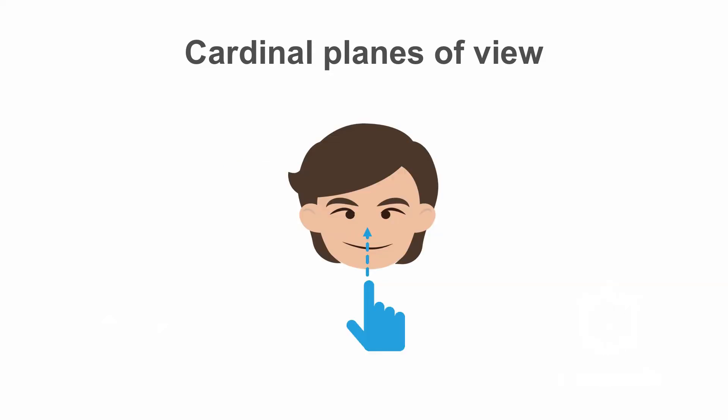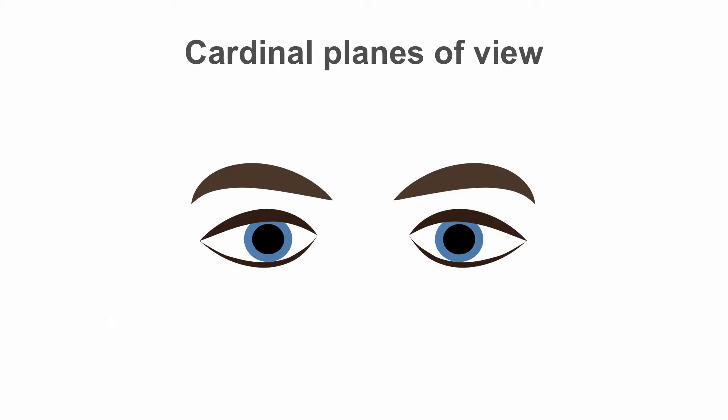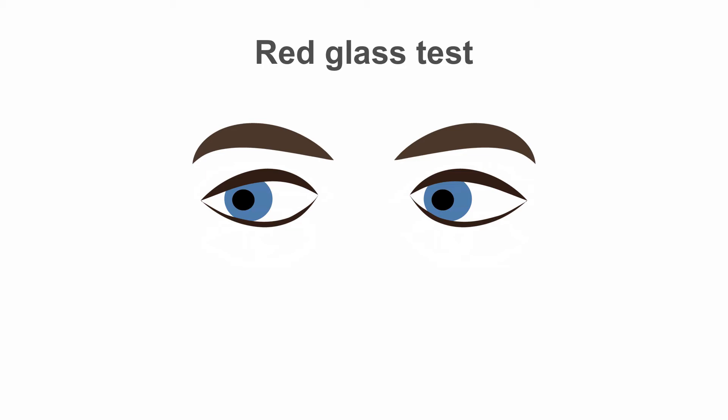After each field is observed, test convergence by slowly bringing your finger toward the patient's nose and encourage them to follow. Look for pupillary constriction, or miosis, as the eyes adapt for accommodation.